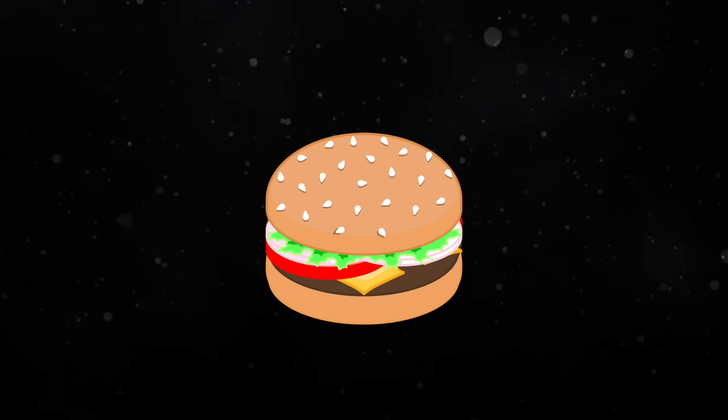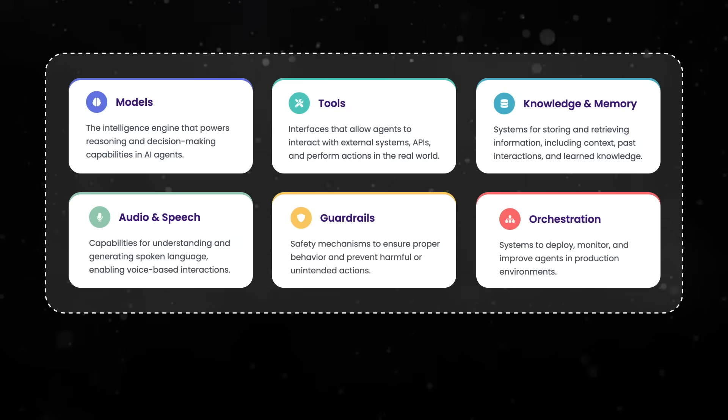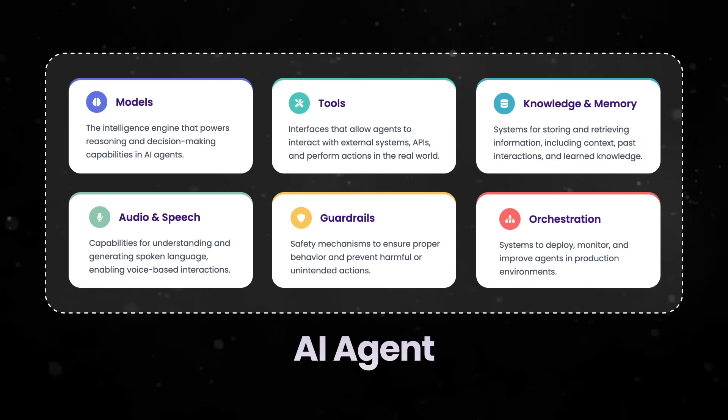The analogy I like to make is that these six components of AI agents are sort of like a burger. In order for a burger to be considered a burger, it needs a bun, a patty, vegetables, and condiments. You can have different types of buns — whole wheat, white, even lettuce buns — and different types of patties, but you do need these different components to be called a burger. Same with AI agents: you can have different types within these components, but you need all of them to be considered an AI agent.